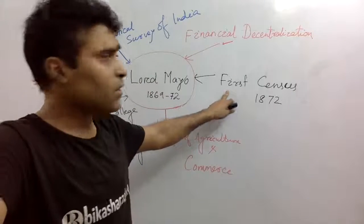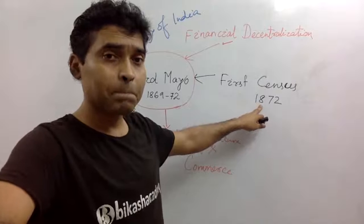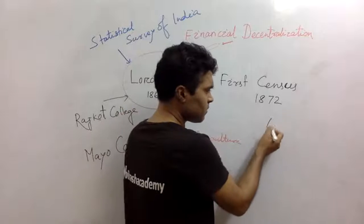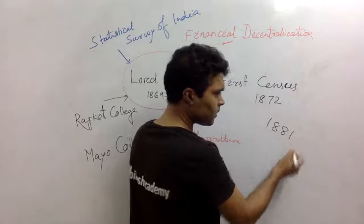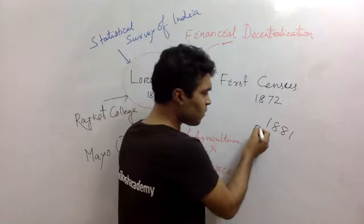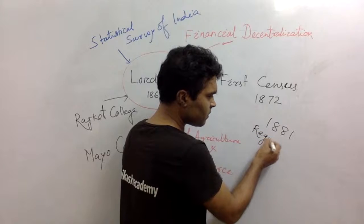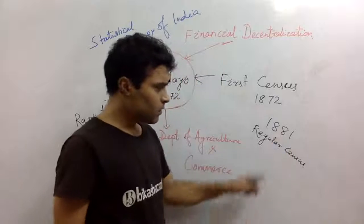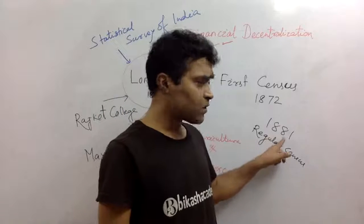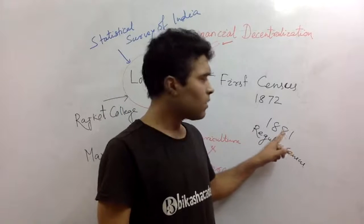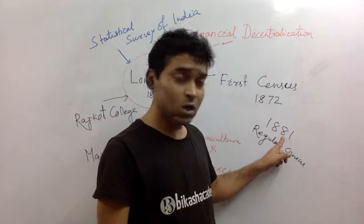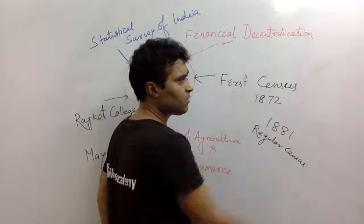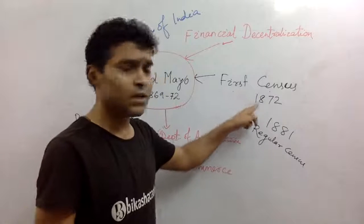During his tenure, the first census was conducted in 1872. Do not confuse with the 1881 census. Actually in 1881, the first regular census was conducted. Just remember: first regular census was conducted in 1881 during the time of Lord Ripon. But here we are talking about the first census — first census was conducted in 1872.